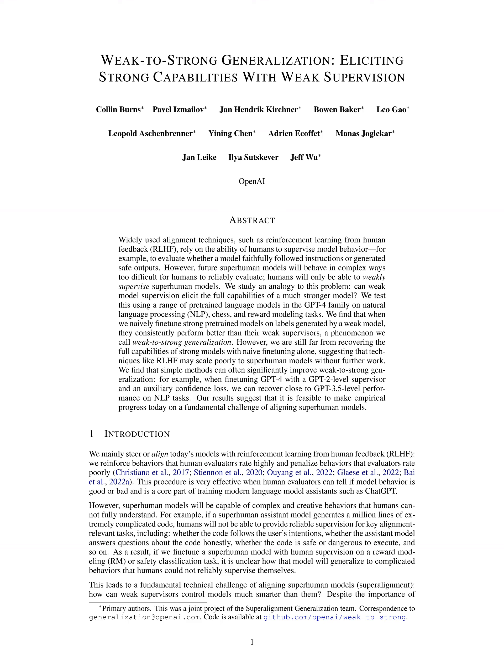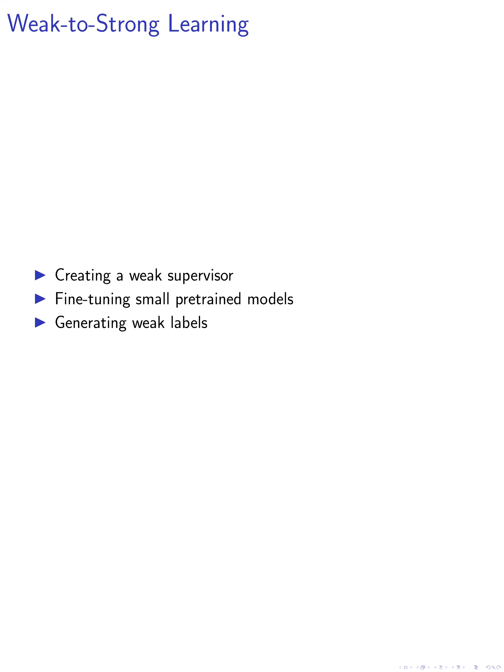In this paper, we delve into the process of weak-to-strong learning, a method that involves training a strong student model using weak supervision. We begin by creating a weak supervisor, which is achieved by fine-tuning small pre-trained models on ground truth labels. We then generate weak labels using the weak model's predictions on a held-out set of examples.